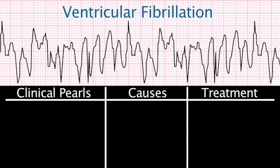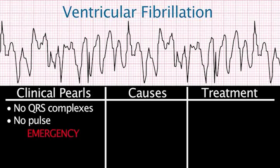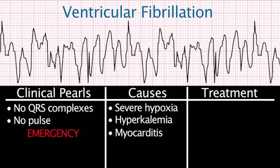Ventricular fibrillation occurs when there is electrical activity in the heart without identifiable QRS complexes. There is uncoordinated ventricular contraction without cardiac output. Therefore, the patient's heart is not contracting and the patient does not have a pulse. This is a medical emergency. Causes include severe hypoxia, hyperkalemia, and myocarditis.